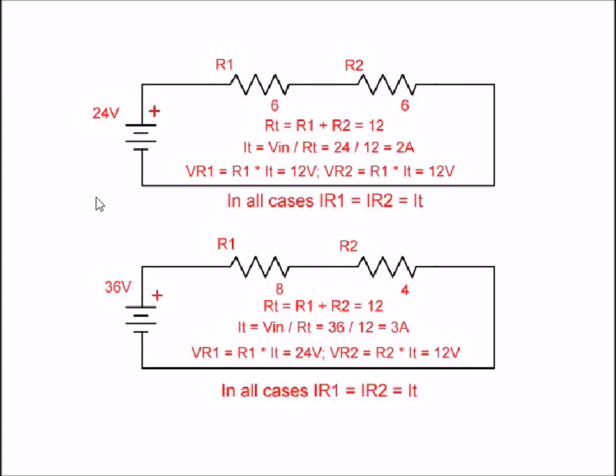Let's look at the same circuit as we had before, but this time I'm going up to 24 volts. R1 is still 6 ohms, R2 is still 6 ohms, so our R total is 12. But this time your I total is going to be the voltage in, 24 volts, divided by 12 is 2 amps. So, my current now is 2 amps.